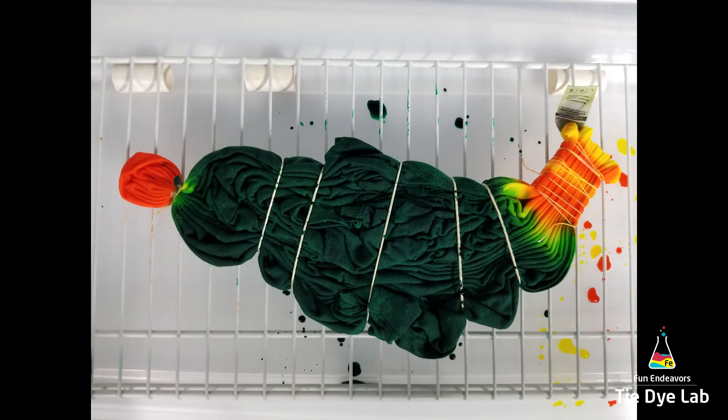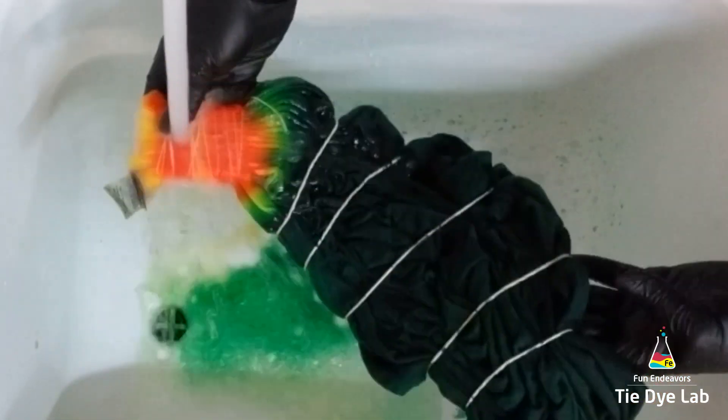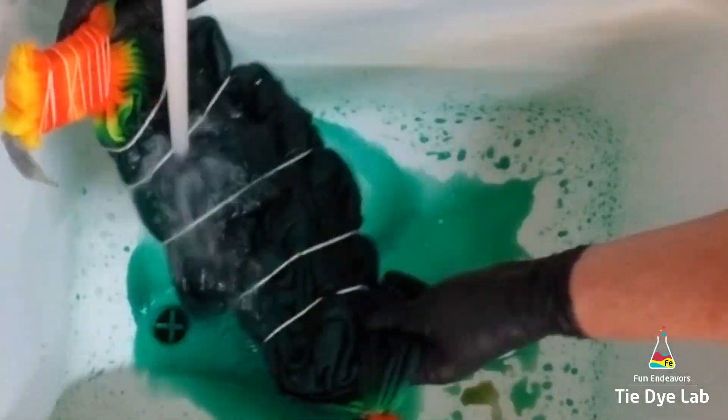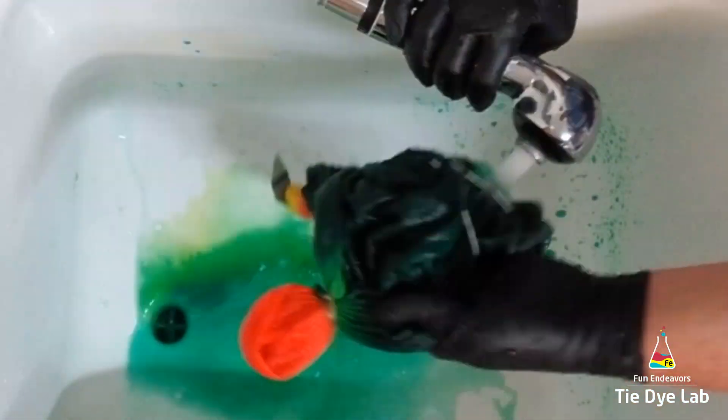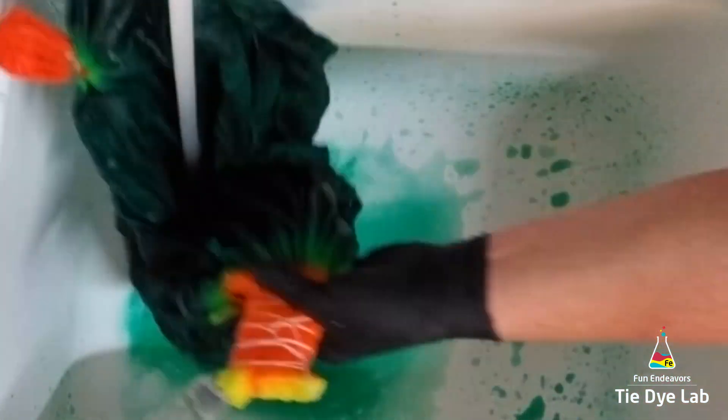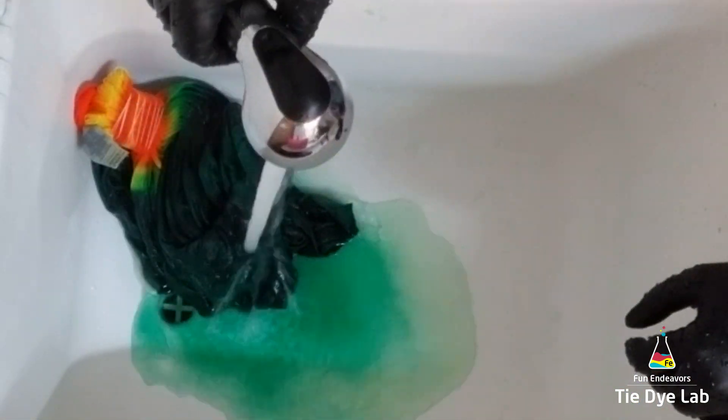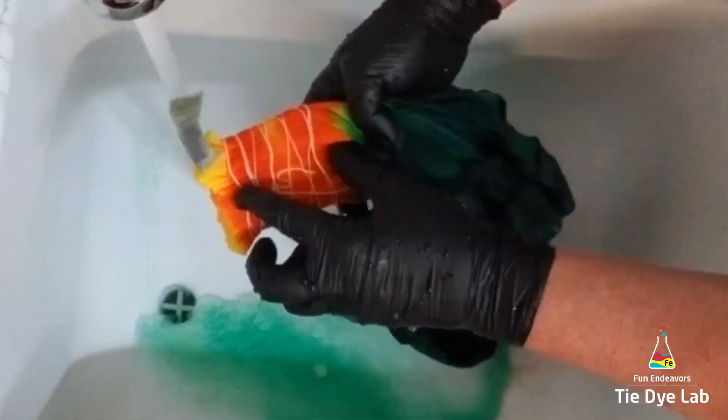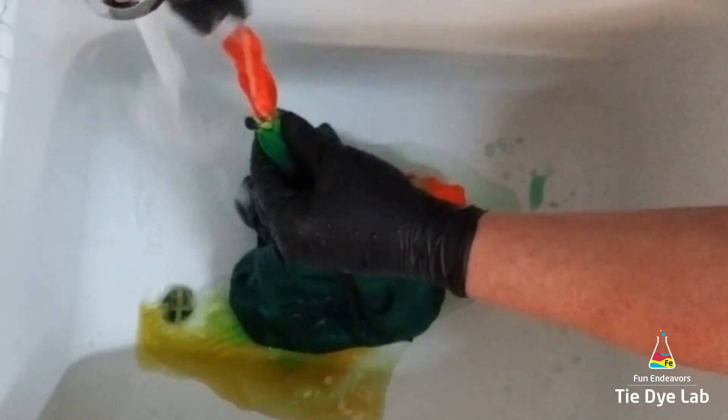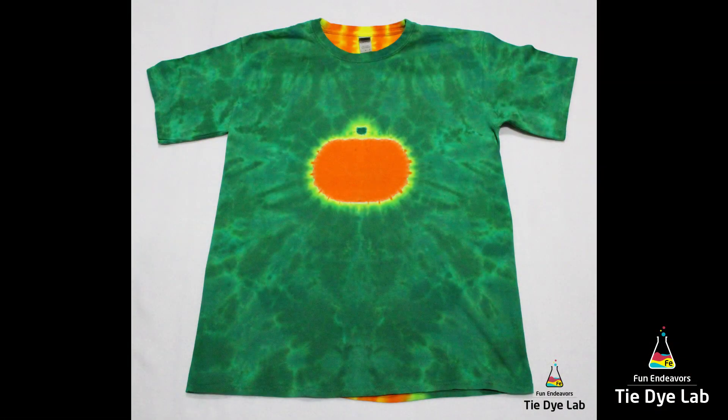After I finished applying the dye, I set the shirt aside and allowed it to process for 48 hours. I rinsed it really well, washed it in my washing machine using hot water and Dharma's textile detergent, dried it in the dryer, and this is what our shirt looks like.